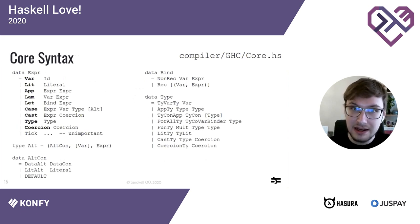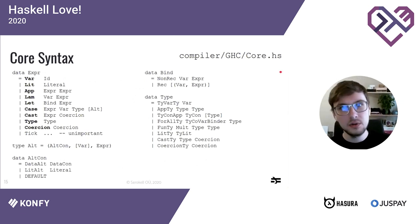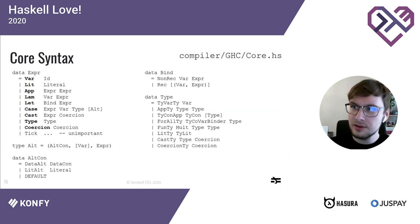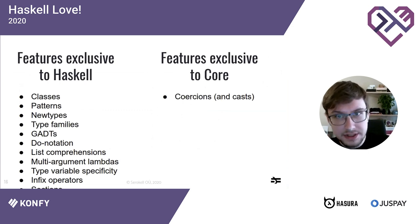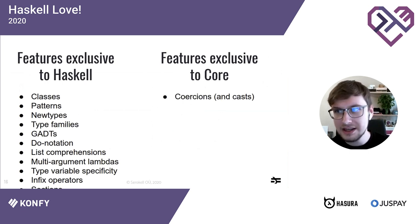What about Core? Here's the entirety of its expression syntax: variables, literals, function application, lambdas, let bindings, case expressions, casts, types, and coercions. That's all of it — nine language constructs. If you learn these nine constructs you know Core. Knowing Core and how Haskell translates into it gives us the ability to reason about Haskell constructs by thinking about the corresponding Core programs. For the purposes of this talk, we'll pretend Core is a subset of Haskell with minor deviations.